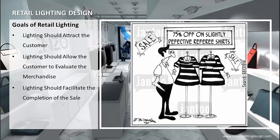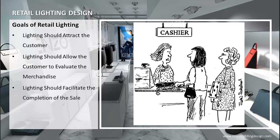The third goal is lighting should facilitate the completion of the sale. Proper lighting at the point of sale is necessary to complete the transaction. Sales personnel should be able to quickly and accurately perform services such as recording sales on the register, preparing paperwork, reading prices, using credit card transaction tools, and packaging. Points of sale as well as customer service areas are important to sales completion.